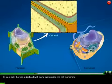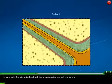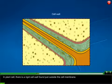In plant cells, there is a rigid cell wall found just outside the cell membrane.